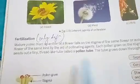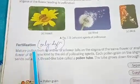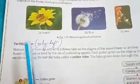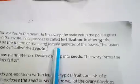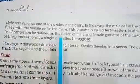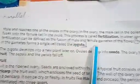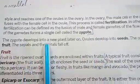The next topic is fertilization. After the pollen grains are transferred from the male part of the flower to the female flower, fertilization occurs. What is fertilization? The fusion of the male gamete with the female gamete to form a single cell is called a zygote. After the formation of the zygote, it develops into a new plant.